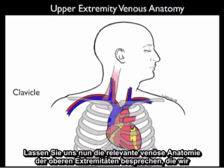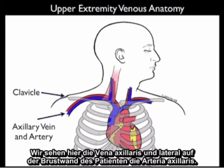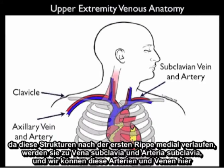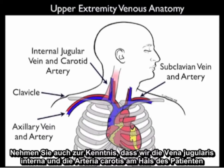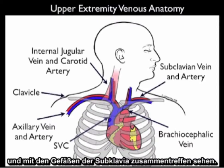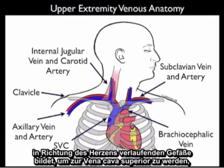Now let's review the relevant upper extremity venous anatomy needed to perform successful cannulation of the axillary vein. We see the axillary vein and axillary artery lateral on the patient's chest wall, with the clavicle and first rib visible. As these structures move medially past the first rib they become the subclavian vein and artery. We also see the internal jugular vein and carotid artery moving down the patient's neck to converge with the subclavian vessels, forming the brachiocephalic vein as they course toward the heart to become the superior vena cava.